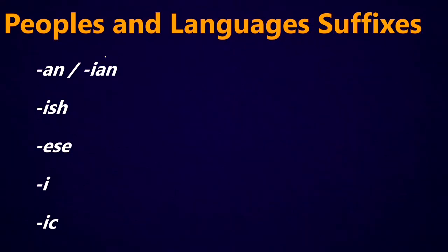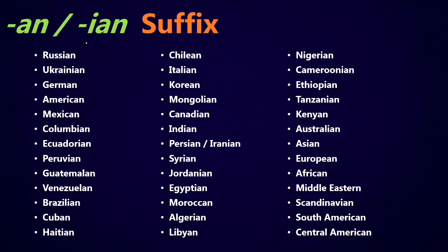So again, to review, when we're talking about the peoples and languages of the world in English, we often use these common suffixes: the AN or IAN, the ISH, the ESE, E or I, and IC. The AN or IAN suffix is by far the most common one we use when naming peoples and languages in English. This isn't even all of the peoples or languages that use it — it's basically just what could fit on screen. So Russian, Ukrainian, German, American, Mexican, Colombian, Ecuadorian, Peruvian, etc., or even the groups: African, European, Asian, Middle Eastern, Scandinavian, South American, Central American. This is the most common one we use in English.